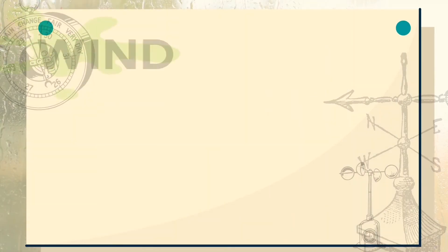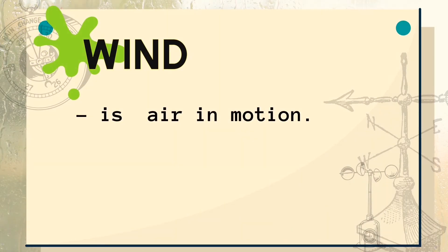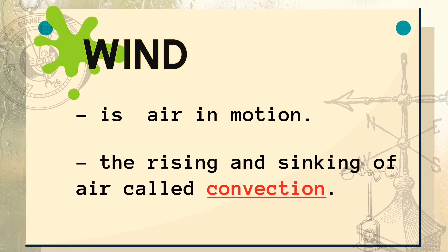Wind is air in motion. The movement of air is one of the main driving forces of weather. The movement of wind affects air temperature. Wind is caused by the uneven heating of the earth's surface by the sun, and it involves the rising and sinking of air, called convection.